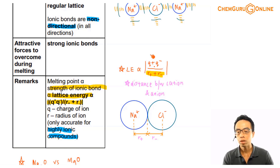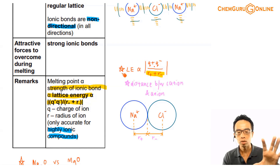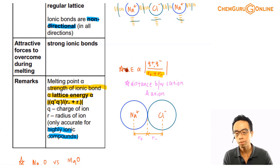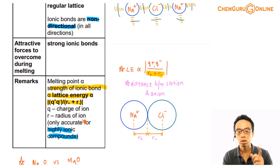It makes sense: if I consider bigger charges, then the numerator is bigger, the magnitude of the lattice energy is larger, and that means a stronger ionic bond. Because the higher the charge of your ions, the more strongly they will attract each other, so the ionic bond will be stronger.